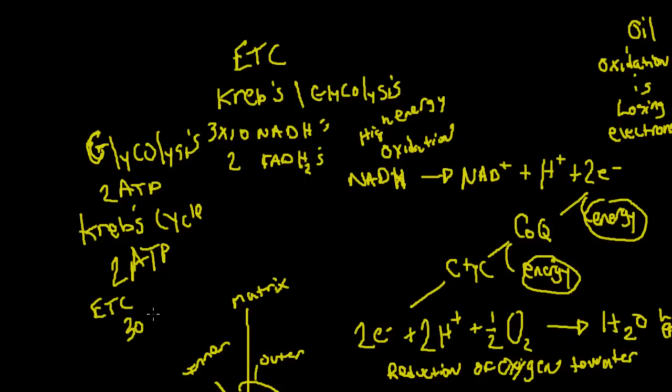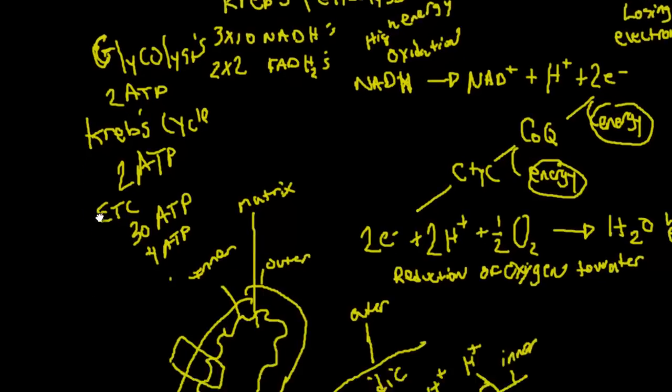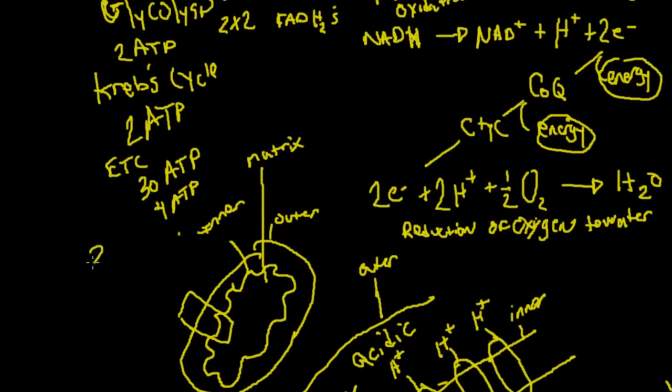So we're going to get 30 there from the NADHs. And then we're going to get for every FAD you get 2 ATPs. So that's going to give us 4 more ATPs down here. And so when we add all that up that's going to give us 38 ATP if the cell is running efficiently. So it has to be running efficiently in order to get these 38 ATPs. In most cases you're getting 29 to 30. But this is best case scenario here.